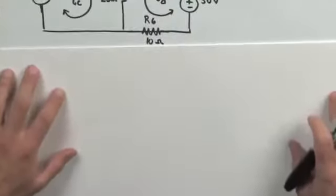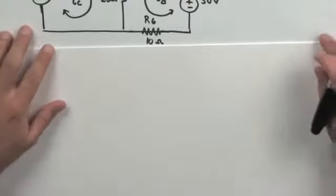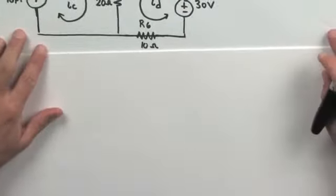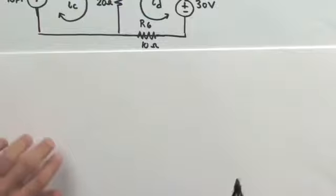One mesh equation will be for mesh I sub D, and the second mesh equation will be the super mesh combination of I sub A and I sub B. Since we're combining mesh A and B together, we'll need a constraint equation to deal with the fact that we lose an independent equation. We'll start with the easy one first: developing the mesh D equation.